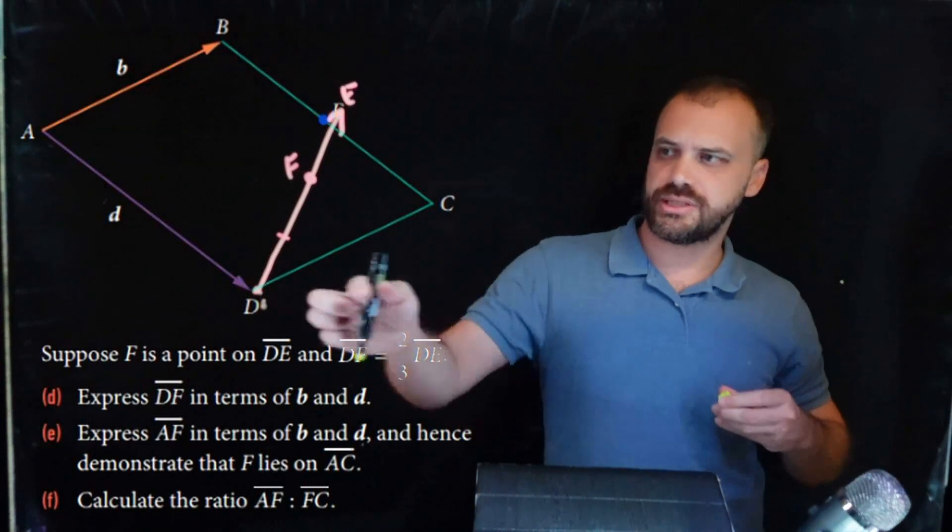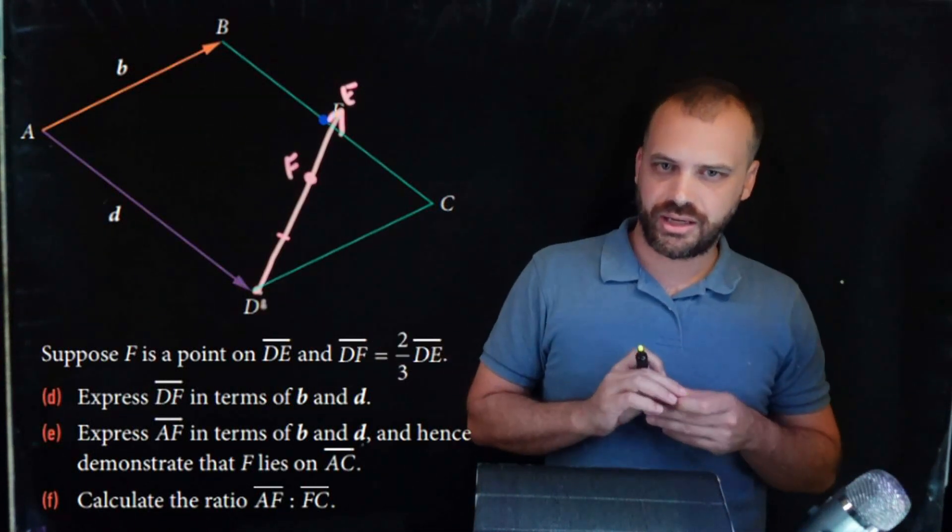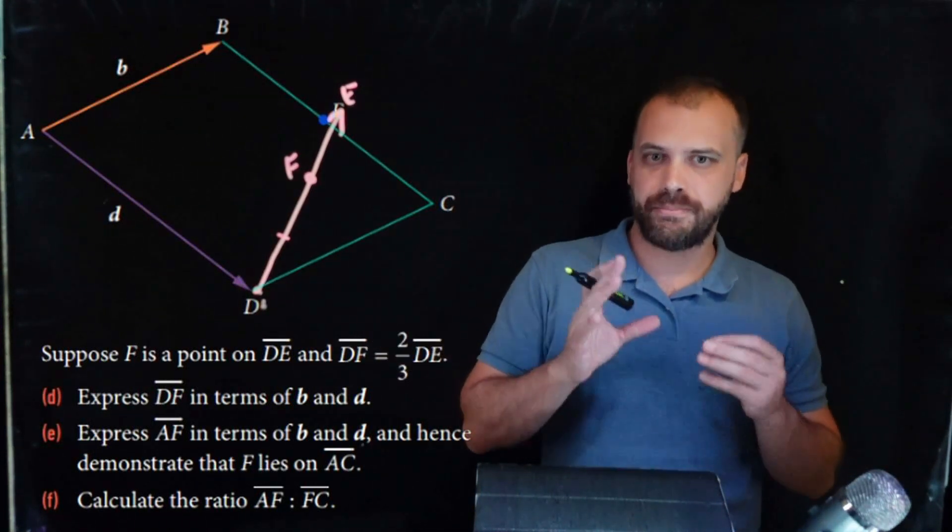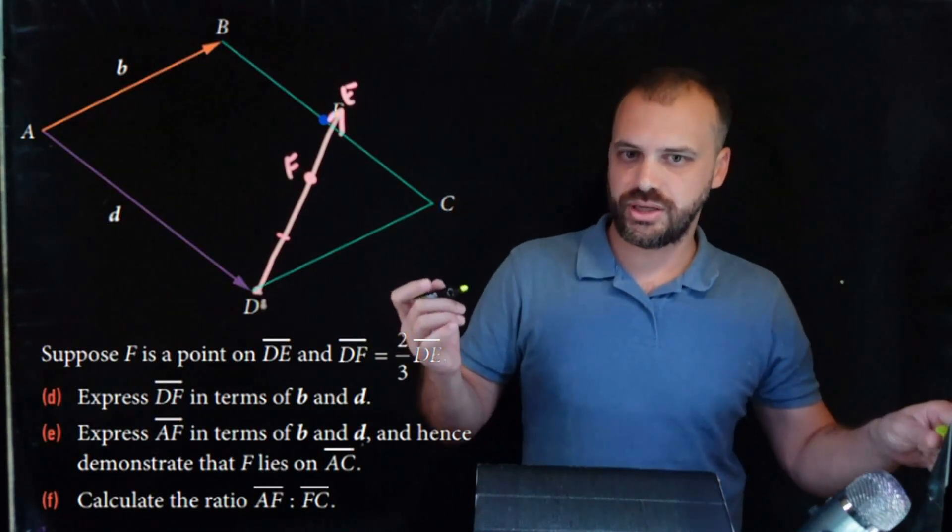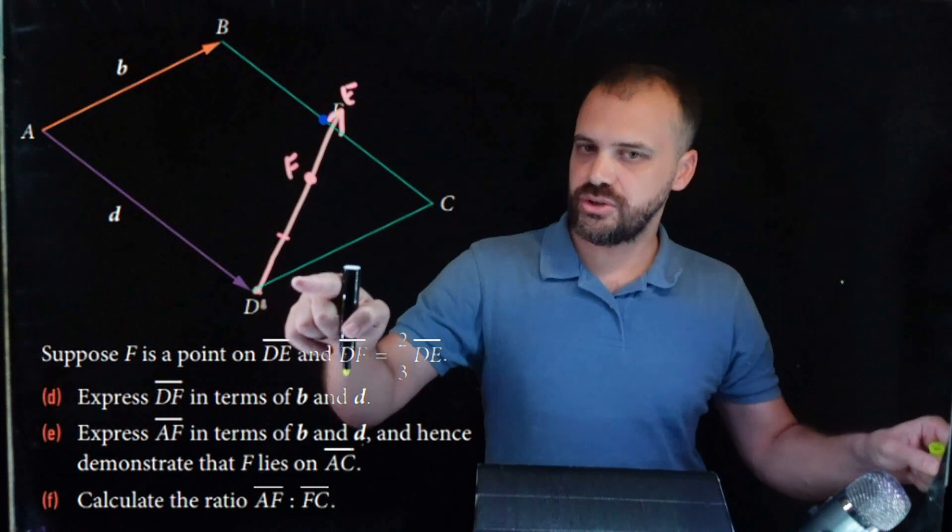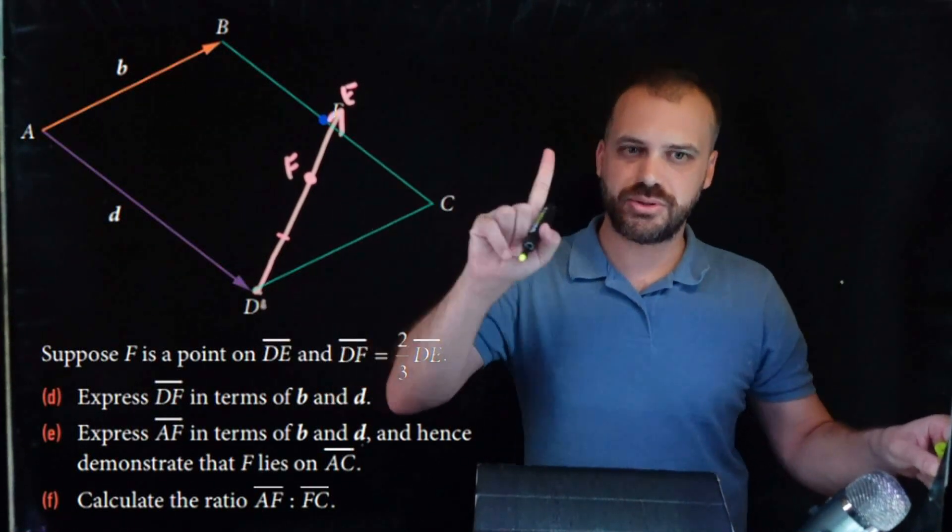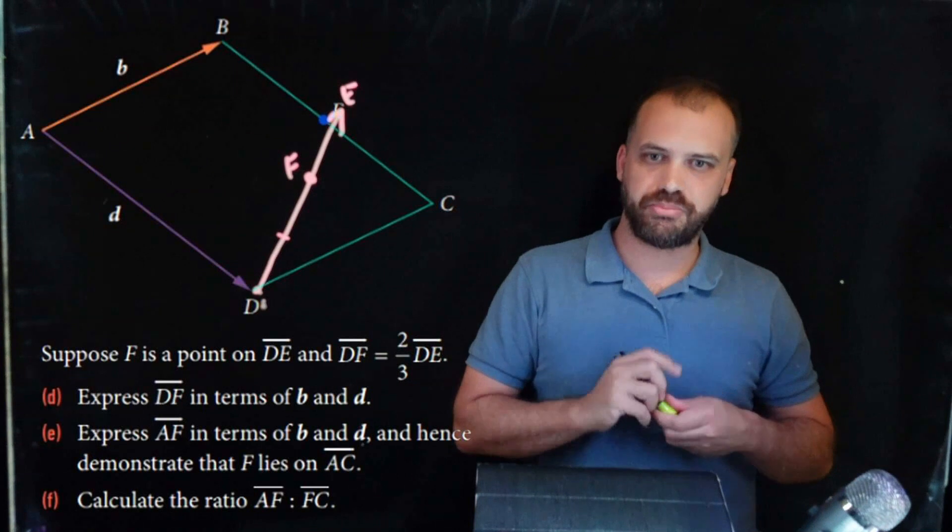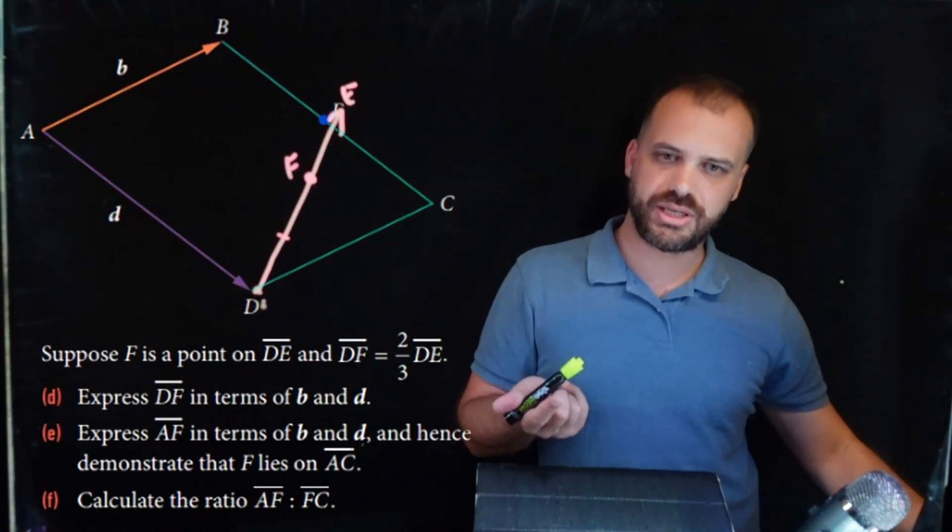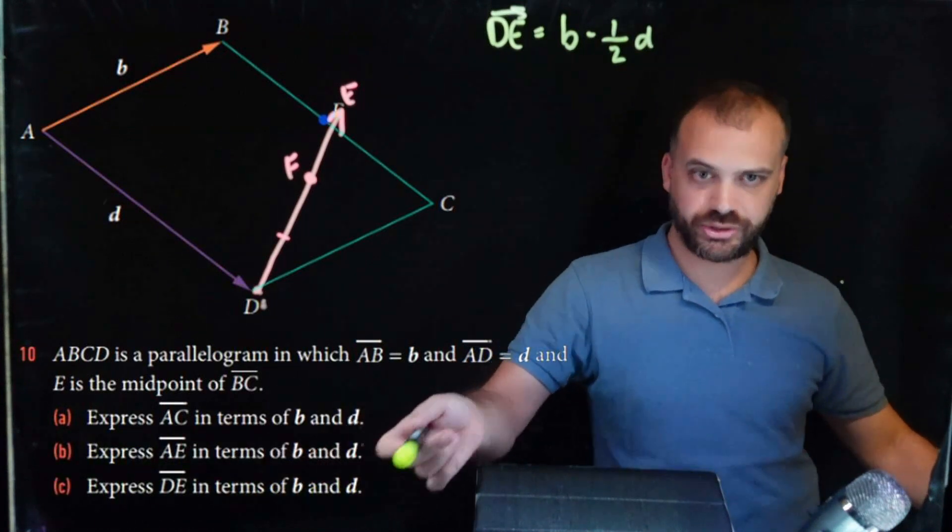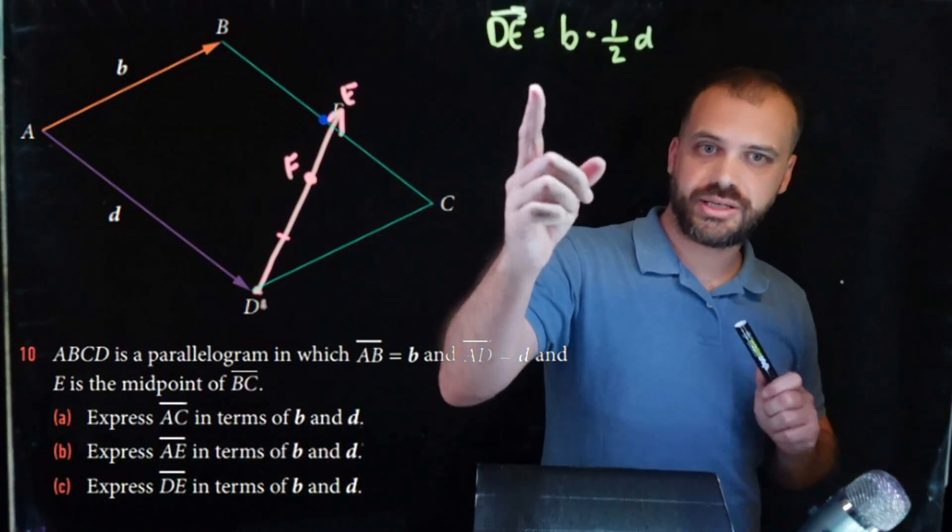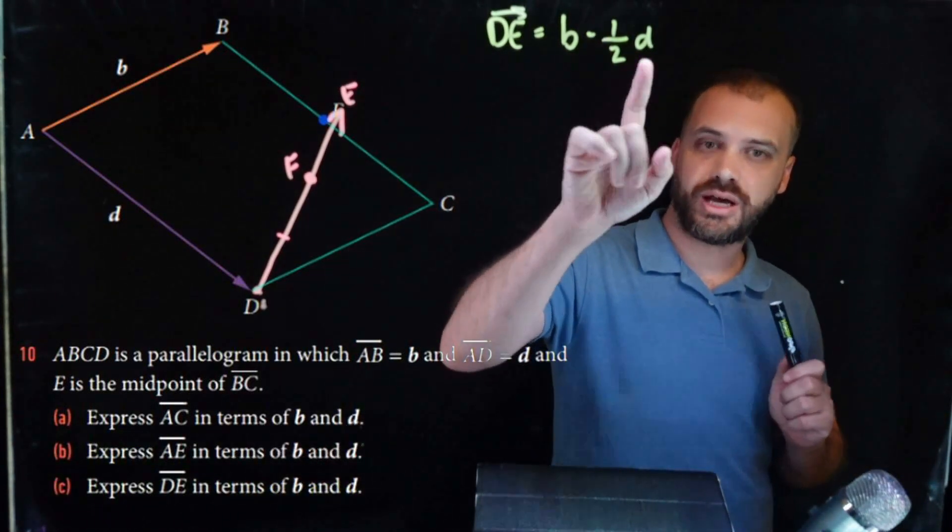So it says express DF in terms of B and D. So DF. So if we knew what DE was, we'd be in business. Do we know what DE is? Yeah, we do. We found it earlier. We found it just a second ago. DE is equal to B minus half D.